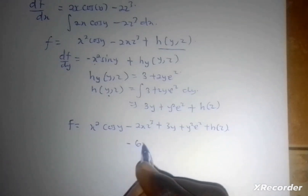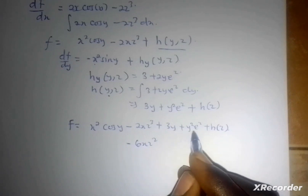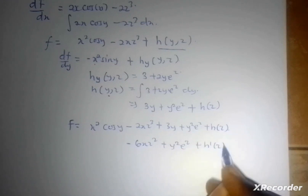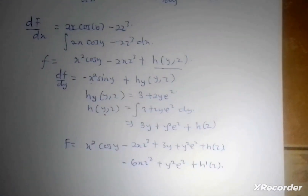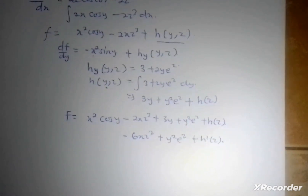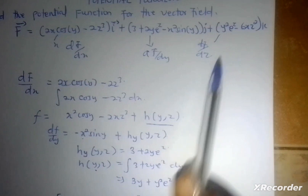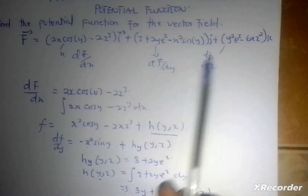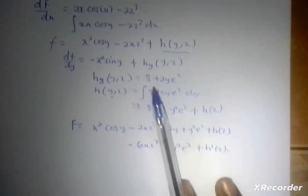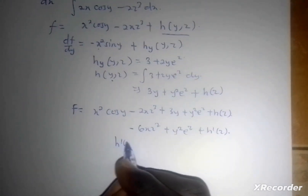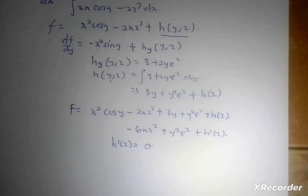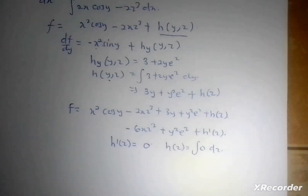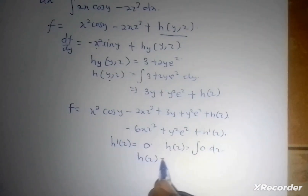When I differentiate with respect to z: the x squared cos(y) term gives 0, the −2xz cubed term gives negative 6xz squared, the 3y term gives 0, and the y squared·e^z term gives y squared·e^z again. Then there's h′(z). Comparing this to the f sub z component from the question, we realize they are the same: y squared·e^z and negative 6xz squared. That tells us that h′(z) equals 0. Therefore, h(z) is simply the integral of 0 dz, so h(z) equals c.